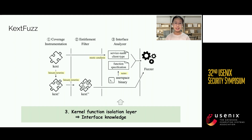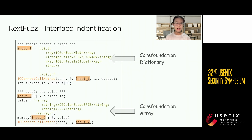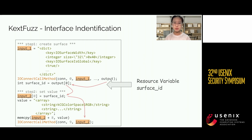Lastly, KXTFuzz uses the system abstraction layer to extract kernel extension interface knowledge. MacOS kernel extension interfaces can be very complex. Except for scalars, pointers, and structures, MacOS also uses strings and serialized expressions to pass arrays, dictionaries, and other complex data formats as kernel extension arguments. And some of the inputs should be the return value of other interface invocations.